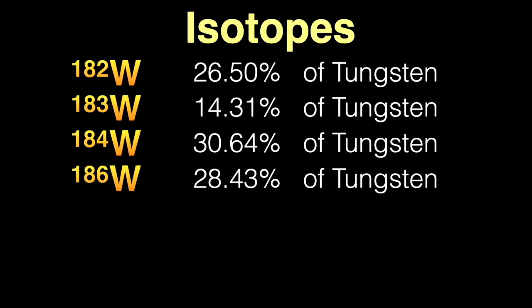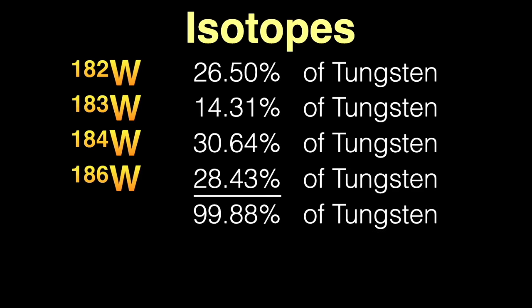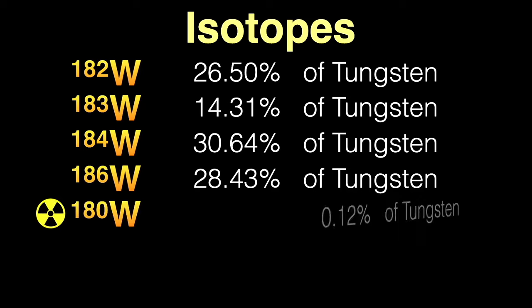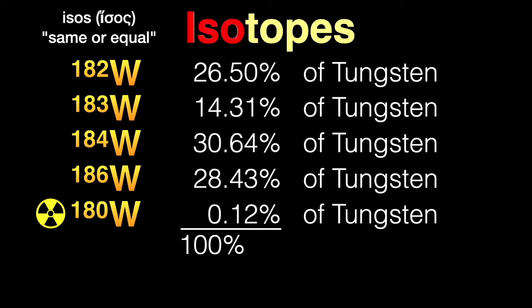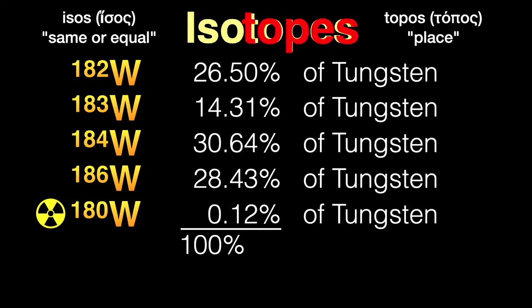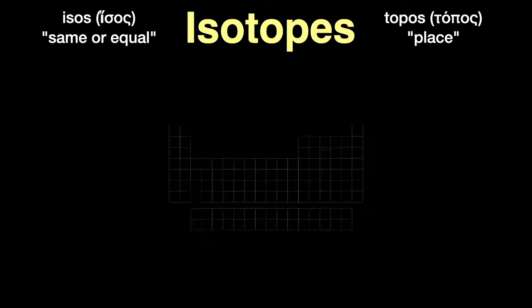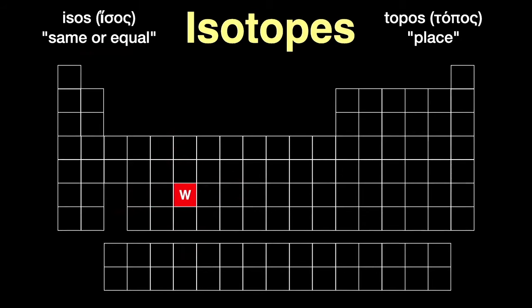If you look carefully, these four stable isotopes don't add up to 100%, only 99.88%. The missing 0.12% is a long-lived radioactive isotope, tungsten-180. Adding this in gives us our 100%. By the way, the word isotope comes from the Greek: isos, meaning same or equal, and topos, meaning place — since all these various forms of tungsten occupy the same place in the periodic table.